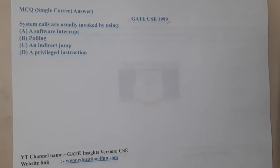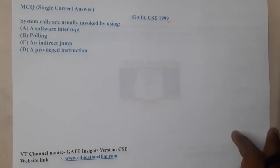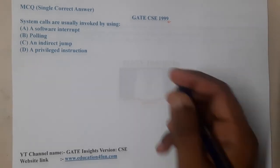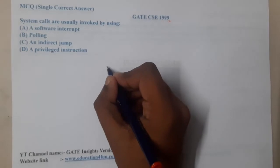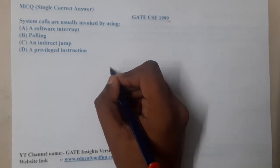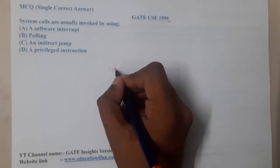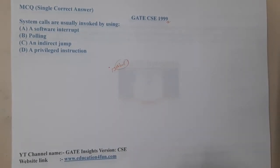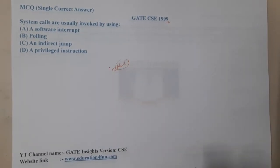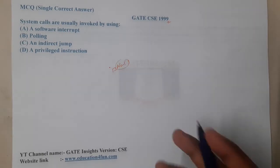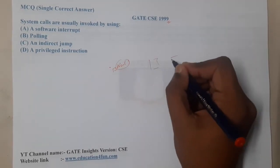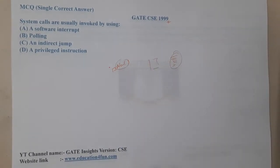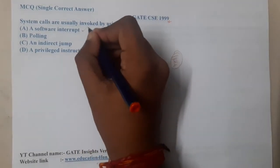So basically, when do system calls get invoked? Whenever a particular software requests for something — for example, if you are right-clicking and creating a new file, at that time a new command will be invoked. So whenever a particular software is in need of something, assume that you created a software which is going to create folders continuously, so at that time that software is making the system call.